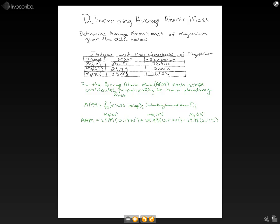Now we just need to do our math. When we do that, we get 18.92811 plus 2.499 plus 2.88378. We have a lot of decimals here, but we'll just round it when we get to our final answer. When we add all those up, our average atomic mass is 24.31.